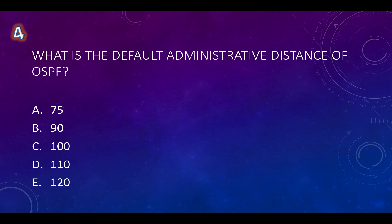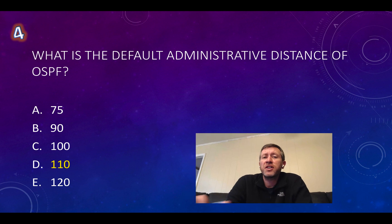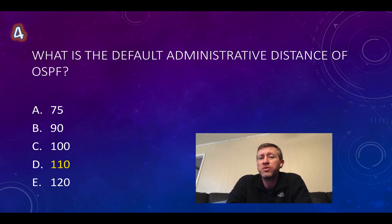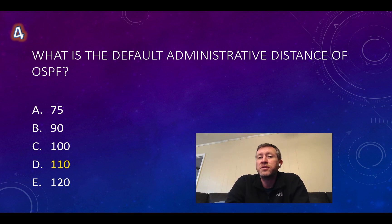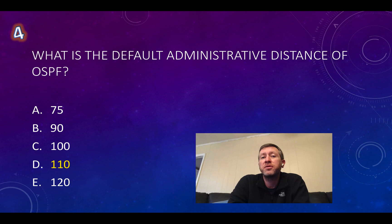Question number four is about administrative distances, and it's definitely a very good idea to know your administrative distances for the Cisco CCNA or CCENT exams — whether it's the 100-105, 200-105, or 200-125. They will all potentially reference administrative distance at some point. The administrative distance for OSPF by default is 110. EIGRP is 90, OSPF is 110, and RIP is 120 by default. Those are the main three routing protocols Cisco focuses on for these exams, so definitely know those at minimum.